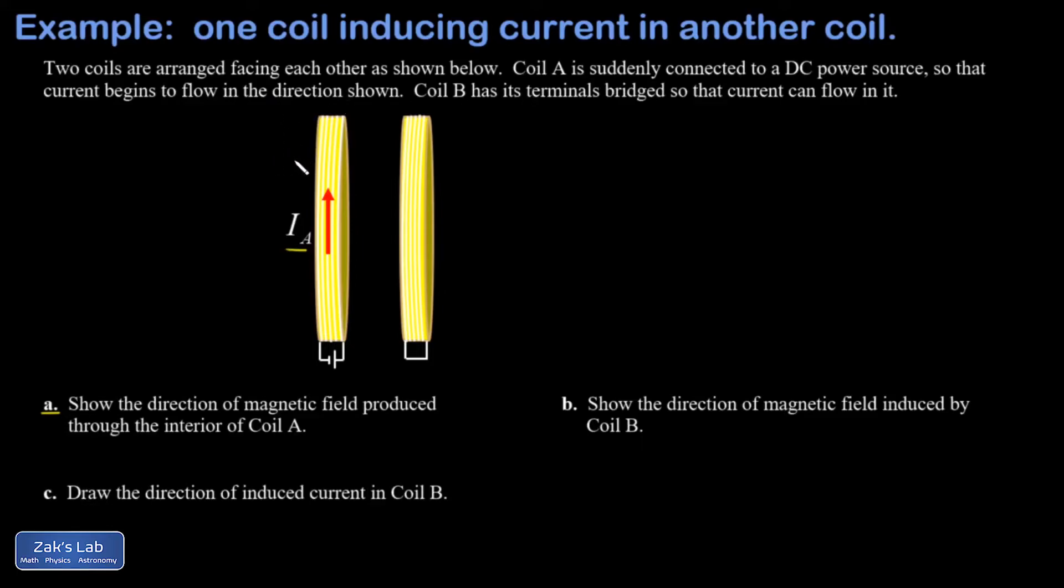So this coil that's just been turned on has a magnetic field going through its interior in this direction, and I'll call that B_A. And that's not constrained to just right inside that coil - that extends around the coil as a magnetic dipole field and it will fringe at the edges and on the other side as well.